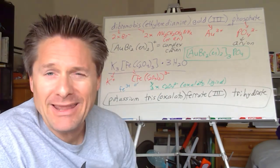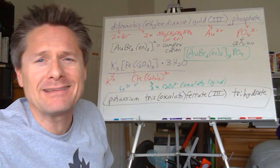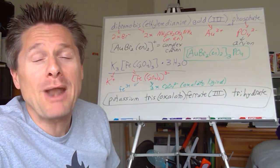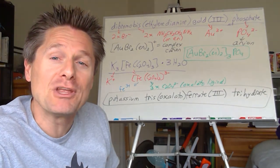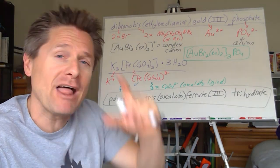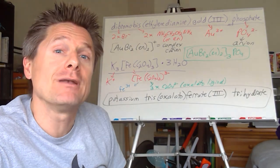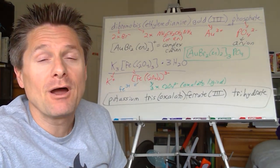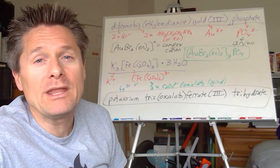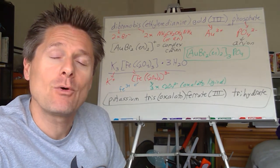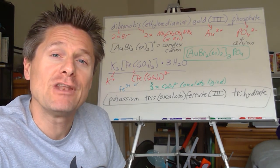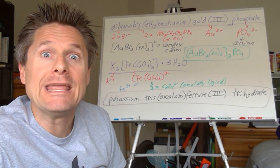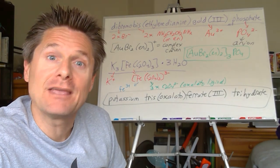That's nomenclature, guys. Practice it — it gets easier and easier the more you do it. Make a flashcard of the different ligands and their names; that will help you tremendously. So we've done video one — intro to complex ions and coordination compounds — and video two, how to name these. Video three will look at some of the reactions they can undergo.